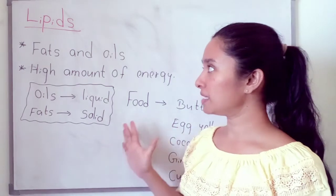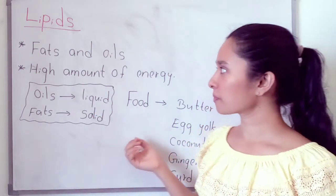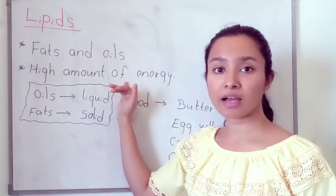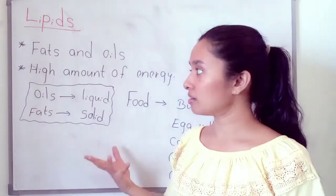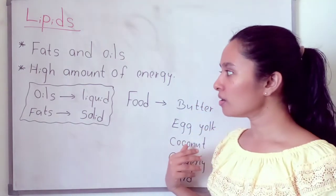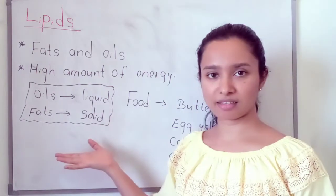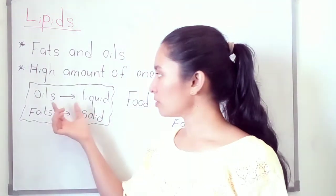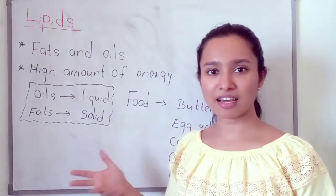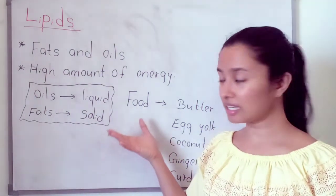Lipids can be found as fats and oils. The function of lipids is that they contain a high amount of energy — when we eat food with more lipids we gain high amounts of energy for our body. Oils are liquid in nature, such as coconut oil and olive oil — there are many types of oils and they are found abundantly in plants.